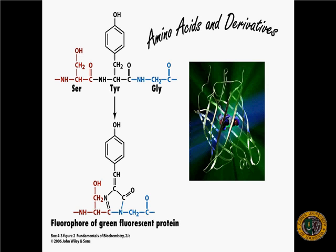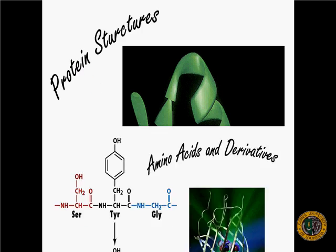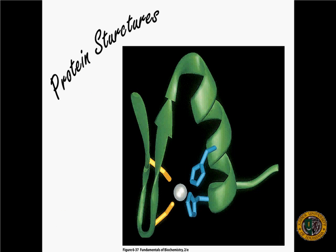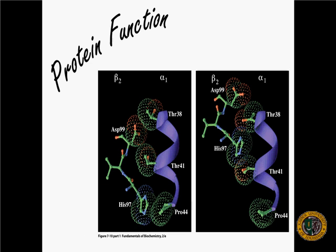The first group of biomolecules we will study are the amino acids and their derivatives. You will know each one of these amino acids, their common name, their three-letter and single-letter code. And we will understand how they contribute to protein structure and form not only primary, but secondary, tertiary, and quaternary structure.